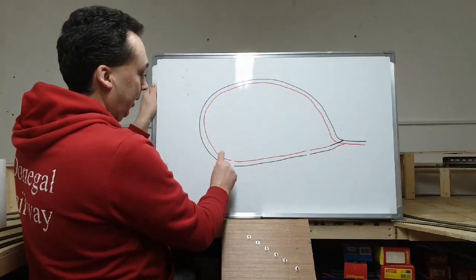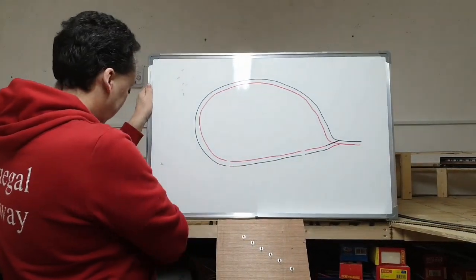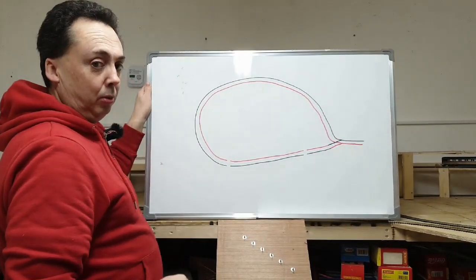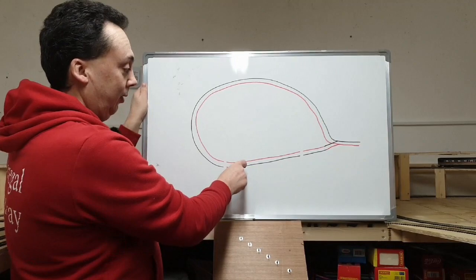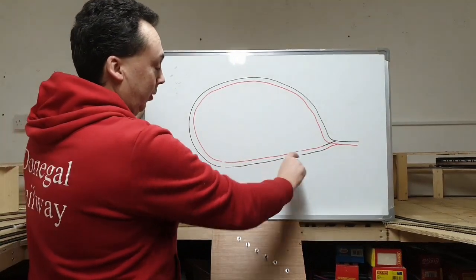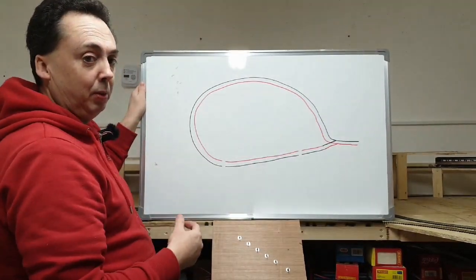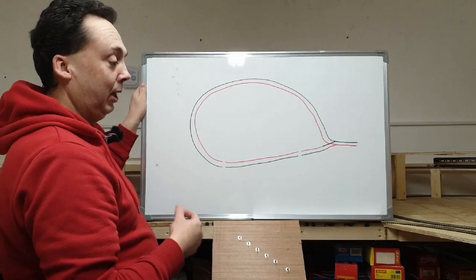And simply when a loco is coming along here, it will recognize it's going to cause a short within milliseconds, and will reverse the polarity of the feed to allow the loco to proceed. And it will do this all before your DCC system recognizes the fault.